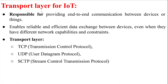The responsibility of the transport layer in IoT is end-to-end communication between devices and things. These devices may be the same type or different types. This involves reliable and effective data exchange even when devices have different network capabilities — for example, when a device using Bluetooth transmits to a Wi-Fi network. There are three transport layer protocols: TCP, UDP, and SCTP.